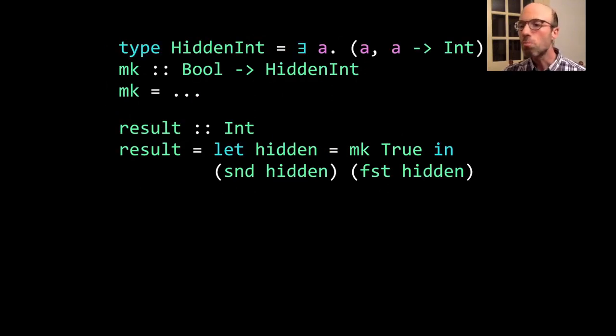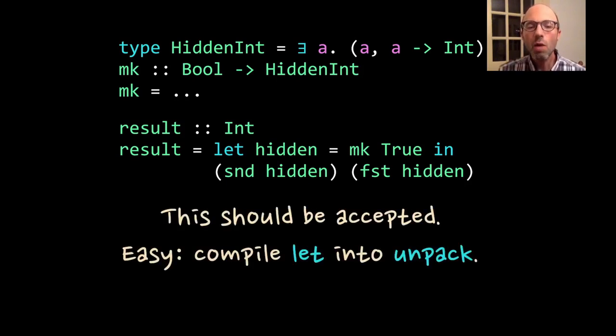There's one more desideratum that we want to consider in our design, and that is here I have a hidden int. The idea is that we have some type A. We don't know what it is, but we can project out an int from it. We can create such a thing using this function mook. In my result here, I'm going to say hidden is mook true. So we create one of these hidden ints, and then I project out the int inside by using the second element of this tuple and applying that to the first element. I want this program to be accepted. There's no trouble here. And this turns out to be relatively easy.